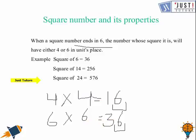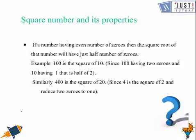Now we can see this property here. If a number has an even number of zeros, then the square root of that number will have just half the number of zeros. Here 100 has 2 zeros and it is a square of 10. In 10 there is just half of 2 zeros, that is only 1 zero.